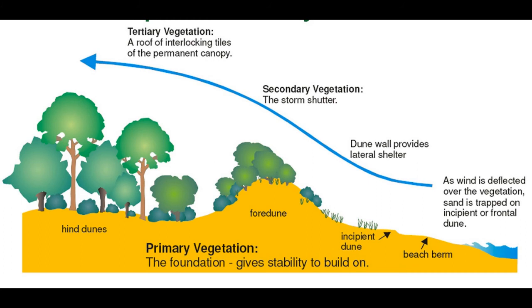Moving further inland we get to the hind dune area where tertiary vegetation is found, and you should be able to see a clear pattern with vegetation type as you move inland away from all the exposure on the beach. Each of these different areas — the incipient, foredune and hind dune areas — all have a different role to play, and that's what we're going to investigate here.